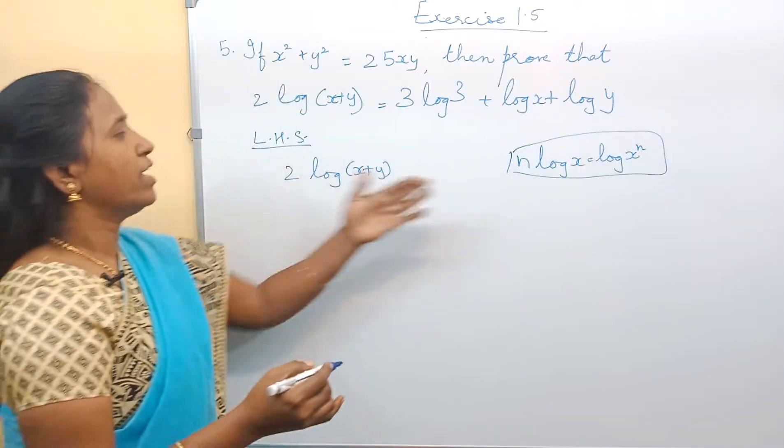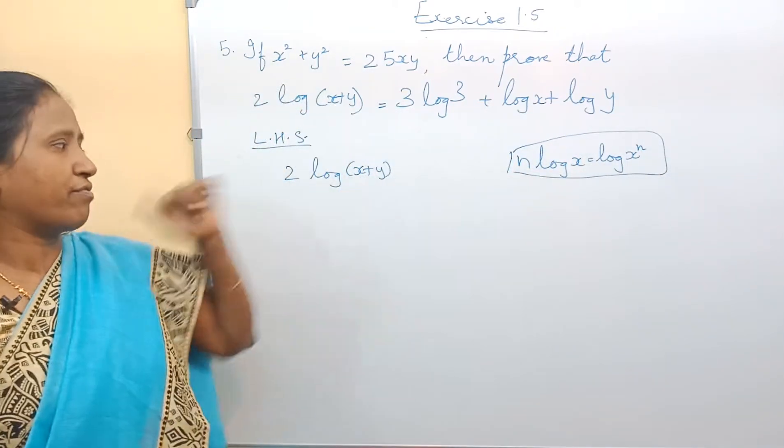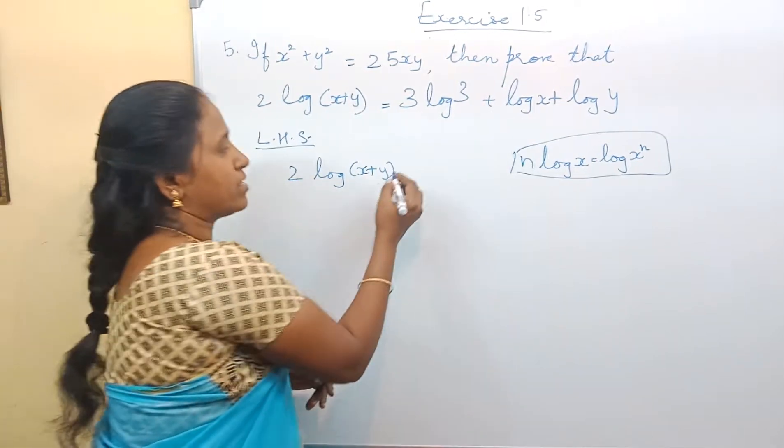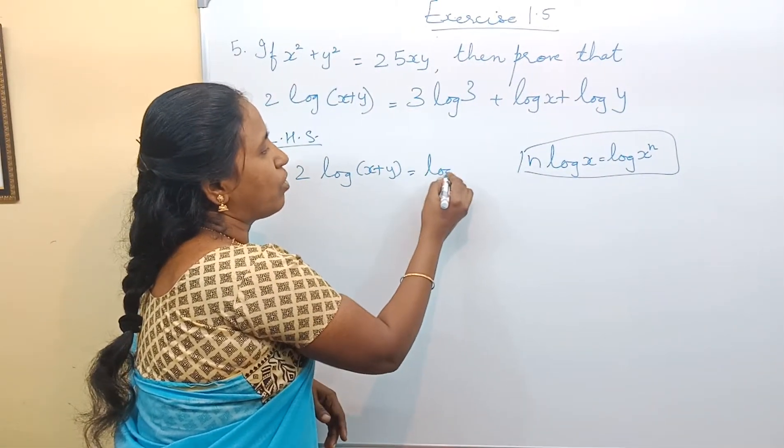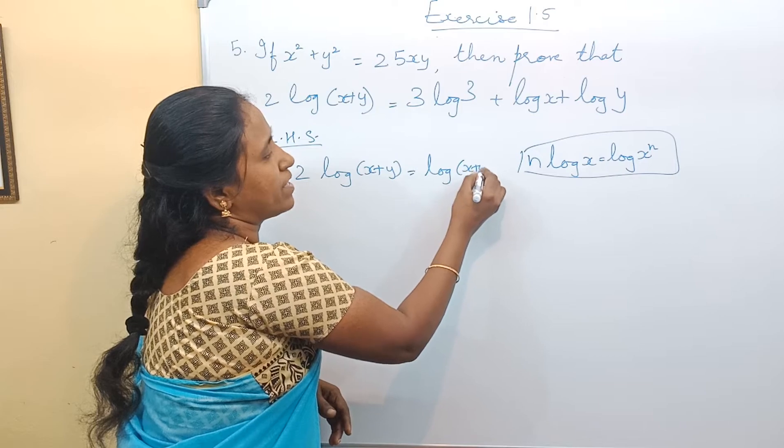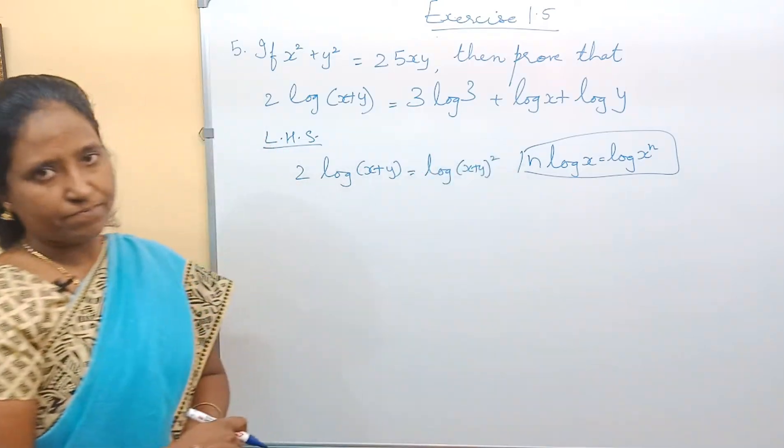We replace it with that form. Now, 2 log(x+y) is nothing but log(x+y)² whole square. Right?